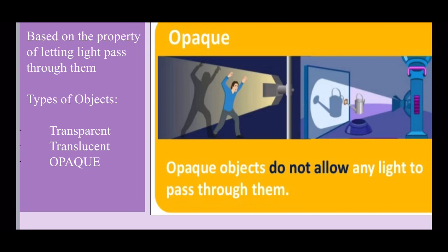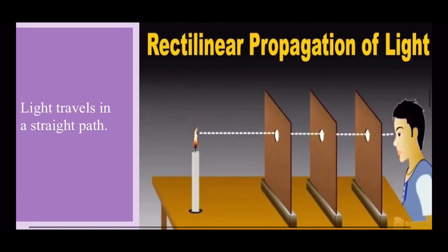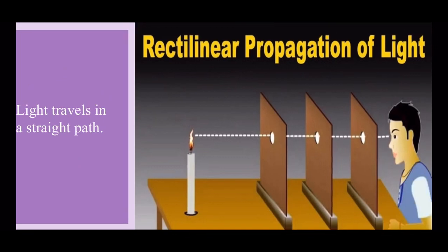Let us talk about rectilinear propagation of light. It means that light travels in a straight line. We can conduct an experiment to test this. Take three pieces of cardboard, make a hole in each at the same height. Arrange them parallel to each other. At one end, we will place a burning candle. And from the other end, we will observe the candle.